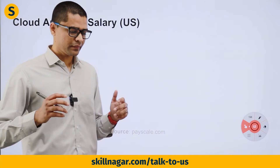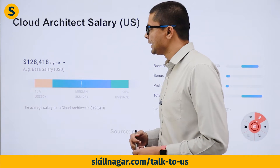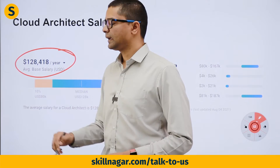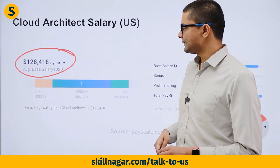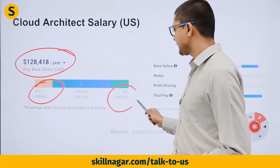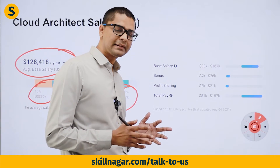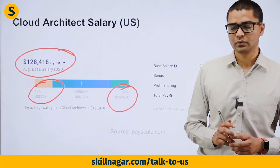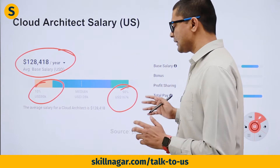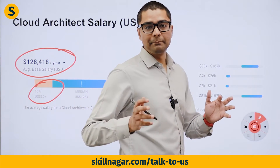Now let's discuss how much you're going to make. We've taken a screenshot from PayScale.com. In the United States, as a cloud architect, you're going to make around $128K a year. If you're a fresher you can expect that range, and if you're an expert you can expect around $167K — and obviously more than that with thorough experience. Companies are investing heavily in this skill set.